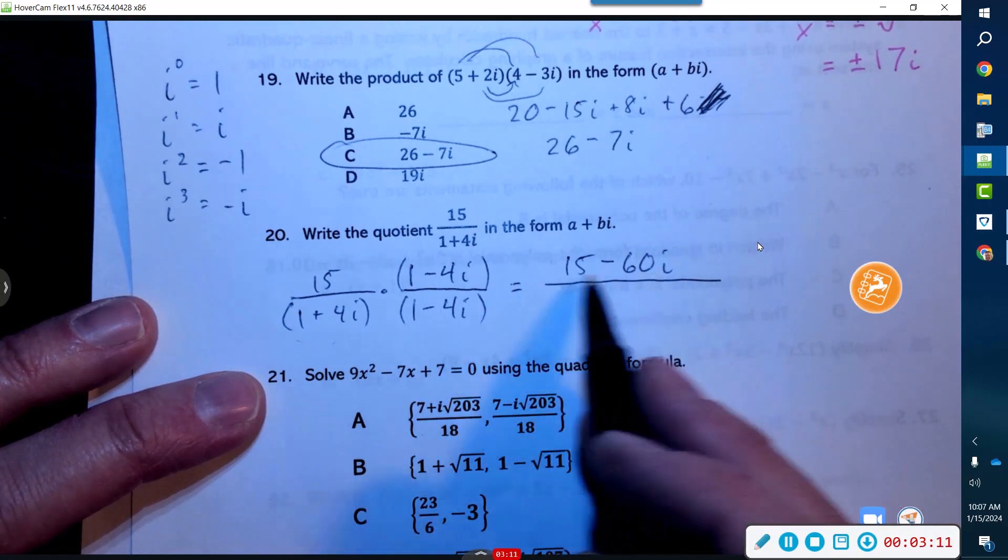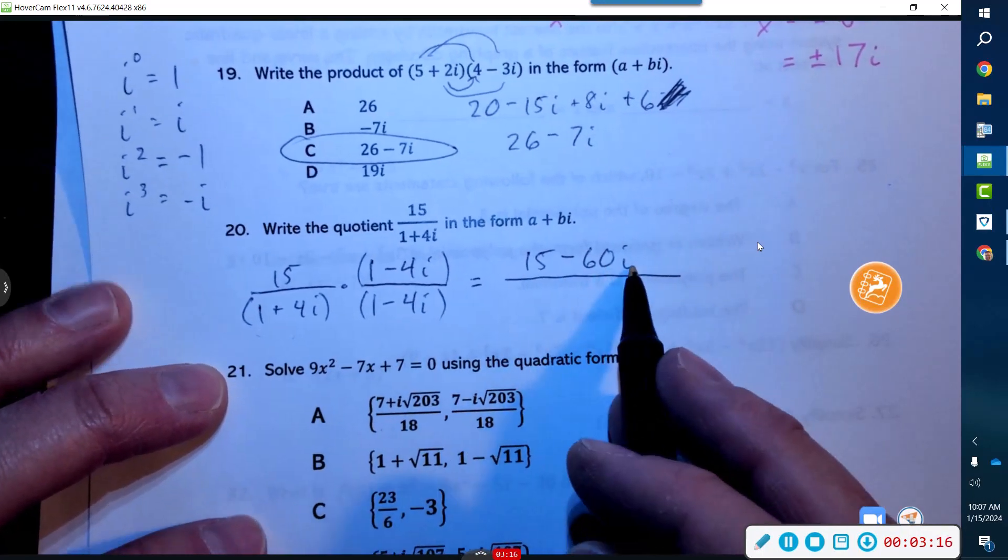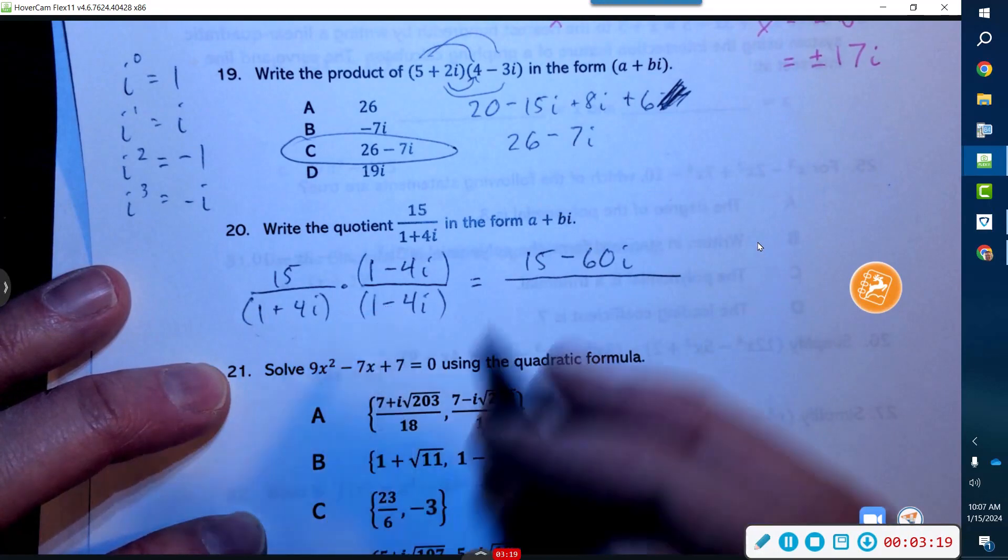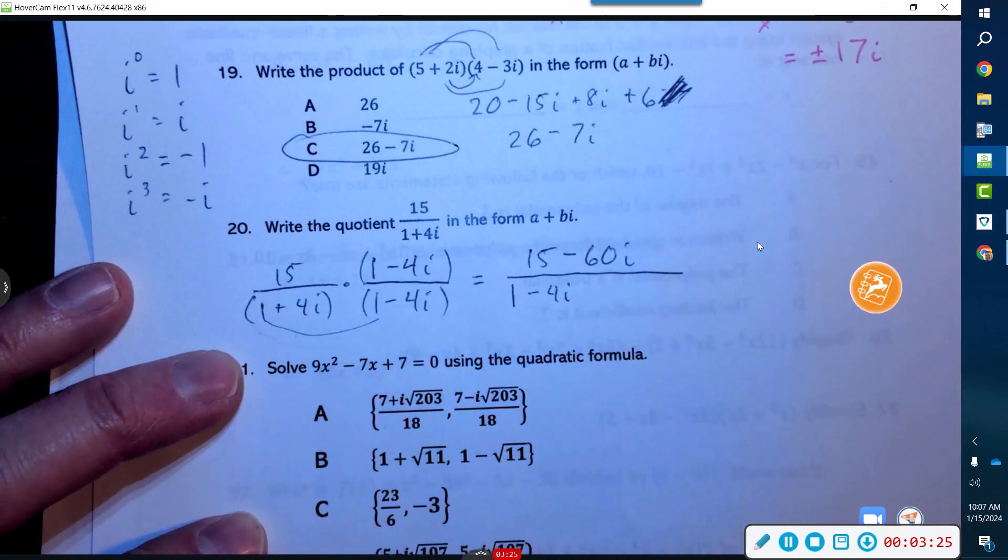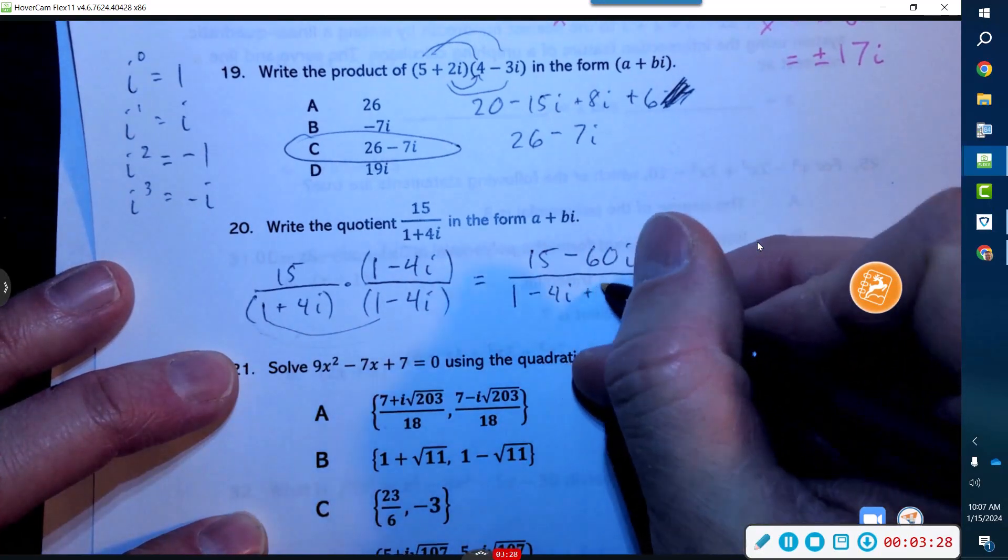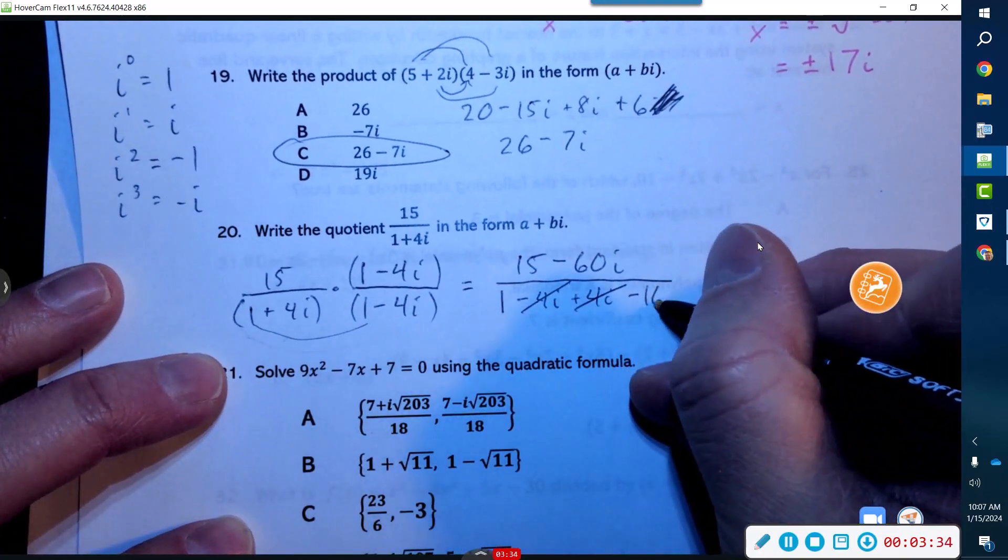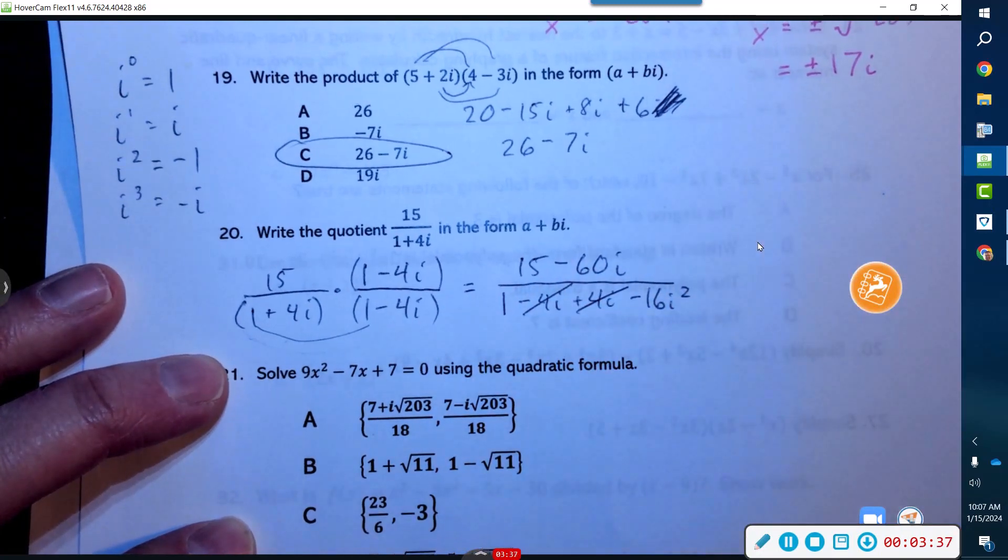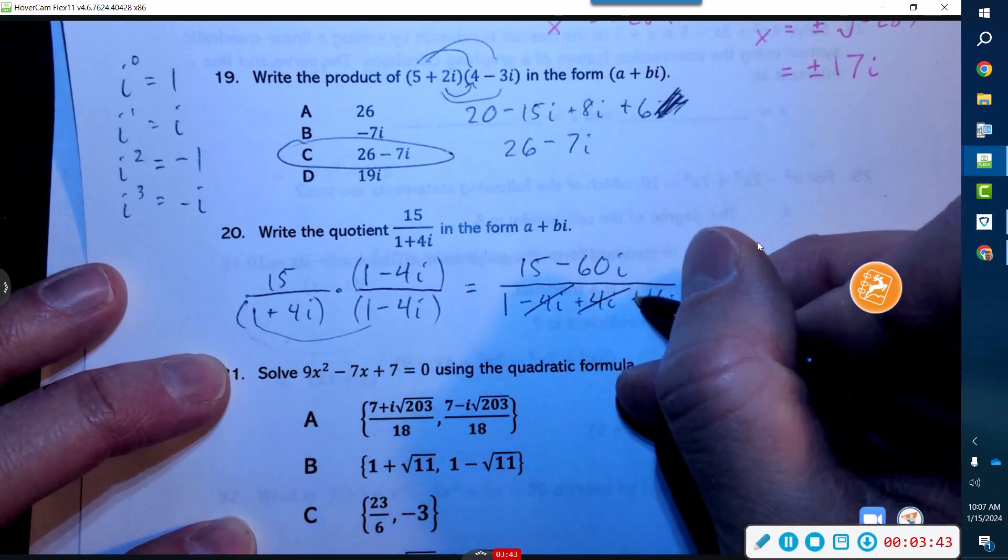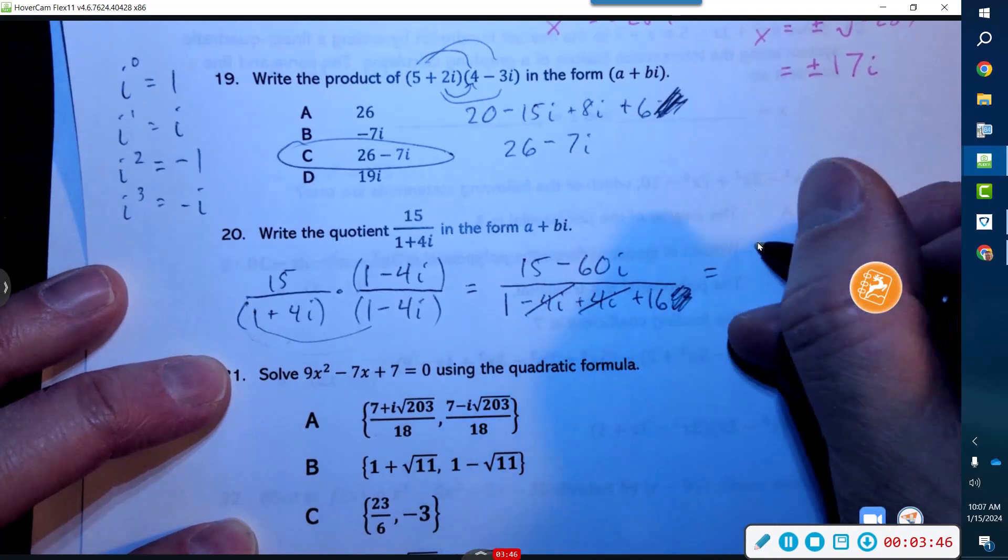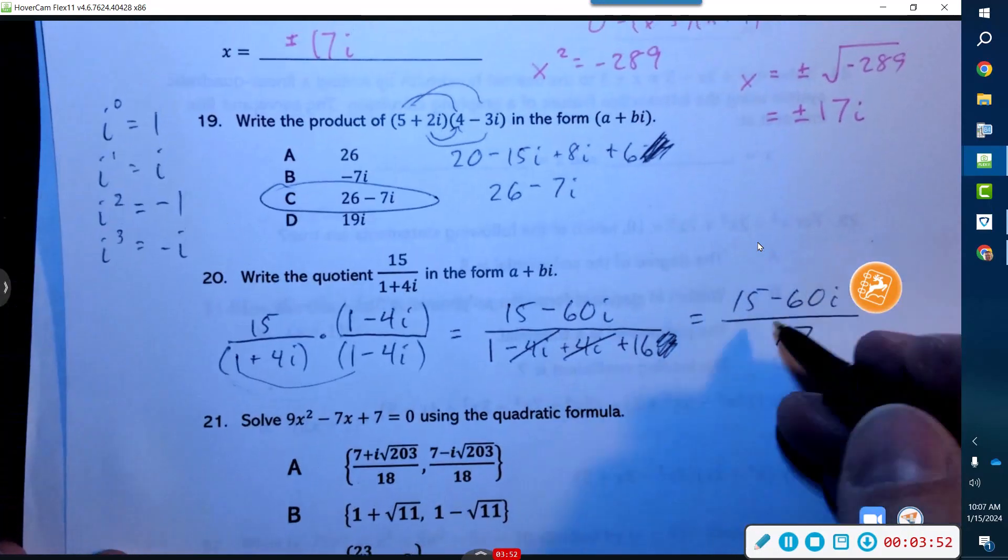So here's 15, minus 4 times 15 is actually 60, so 60i. It's not escaping me that both of these guys are divisible by 5. Now I'm going to go 1 times 1 is 1, 1 times negative 4i is −4i, 4i times 1 is just positive 4i—those cancel—then I'm gonna get minus 16i squared. Now i squared is actually negative 1, so this is 1 plus 16.